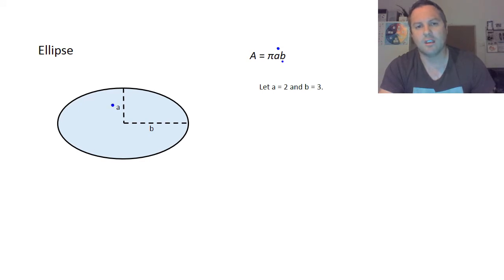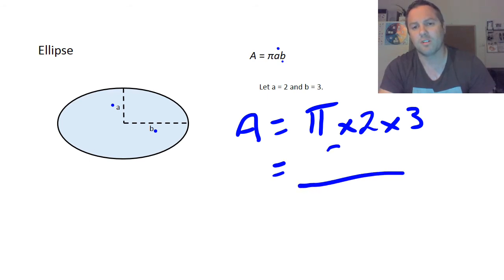So all we're going to do is nice and simple. We're going to get area. We're going to go equals. We're going to have pi again, so 3.1416, and we're going to times that simply by 2 and by your 3. Now I'm going to leave that one for you because I think you guys can do that.